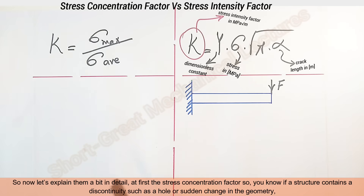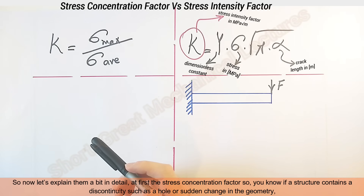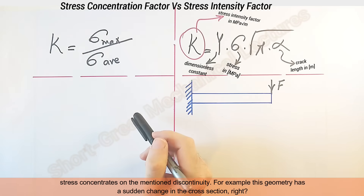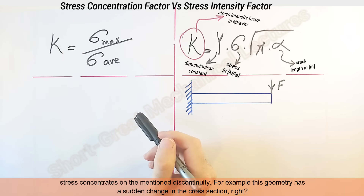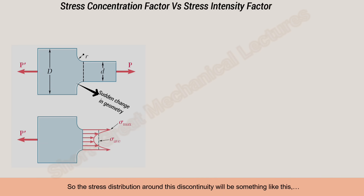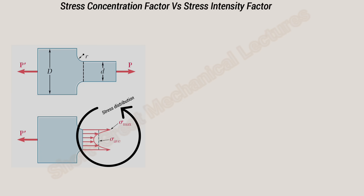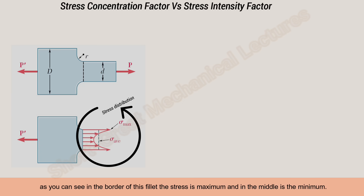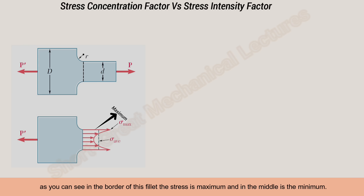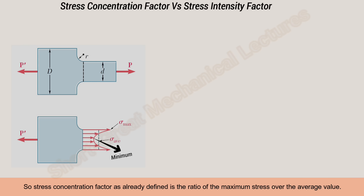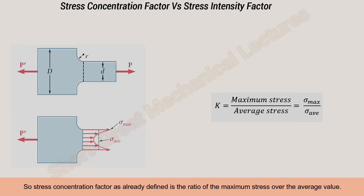So now let's explain them in a bit more detail — first, the stress concentration factor. If a structure contains a discontinuity such as a hole or sudden change in the geometry, stress concentrates on that discontinuity. For example, this geometry has a sudden change in the cross section. So the stress distribution around this discontinuity will be something like this. As you can see at the border of this fillet, the stress is maximum and in the middle it is minimum.